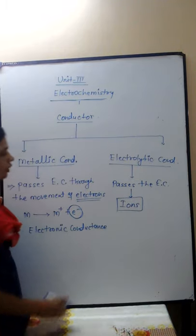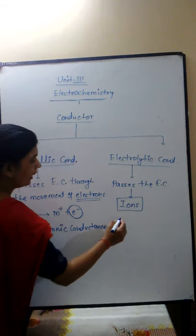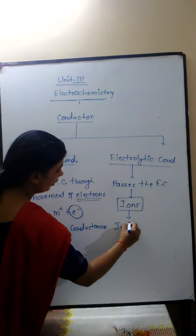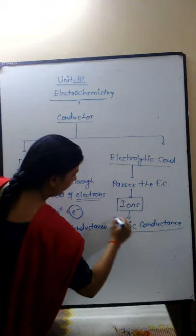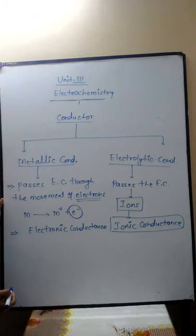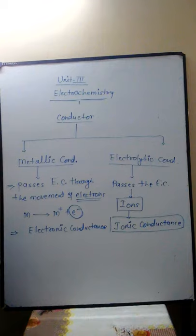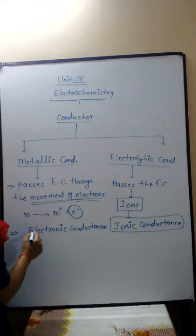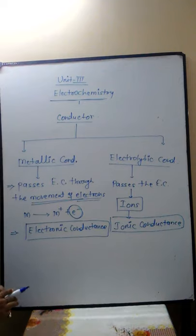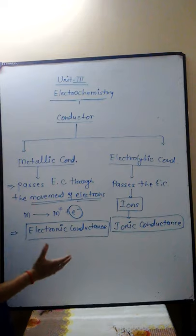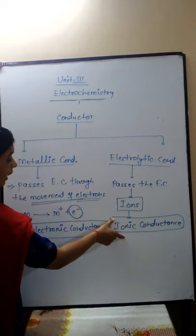Electrolytes pass electricity through the movement of ions. That is why this type of conductance is called ionic conductance. So conductors are classified into two types: metallic conductance, in which electricity passes through the movement of electrons (called electronic conductance), and electrolytic conductance, in which electricity passes through the movement of ions (called ionic conductance).